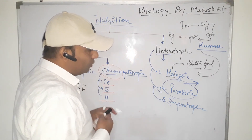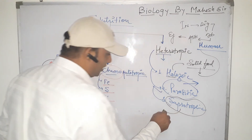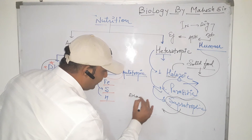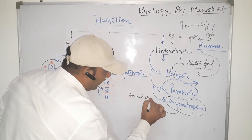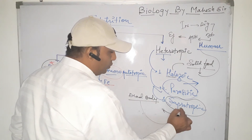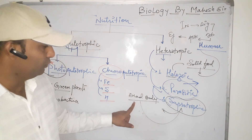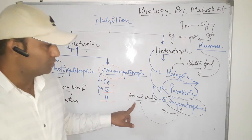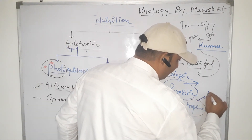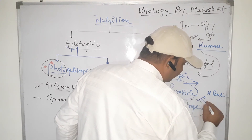The third type is saprotrophic nutrition. This is the type of heterotrophic nutrition in which organisms obtain food from the dead remains or dead body of another organism. In saprotrophic nutrition, saprotrophs use food from dead bodies. Examples include heterotrophic bacteria and fungi.